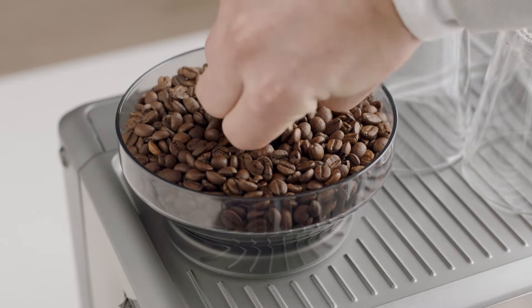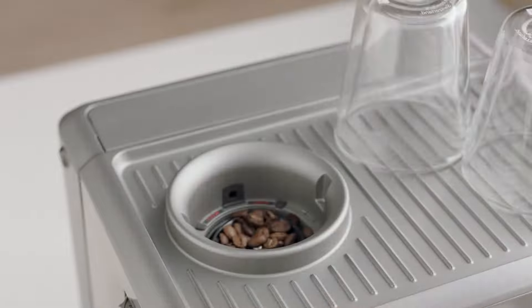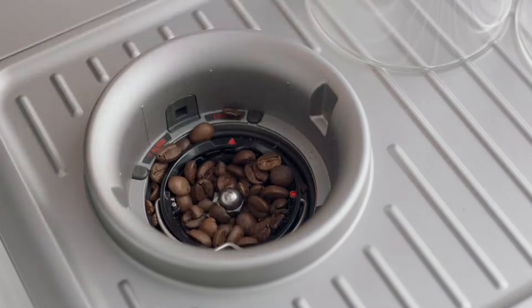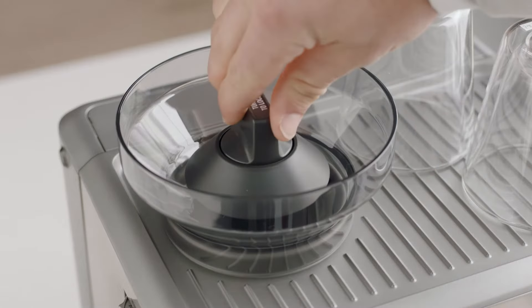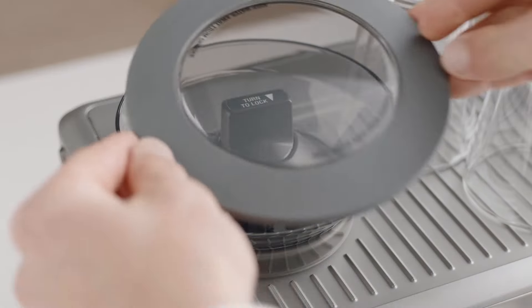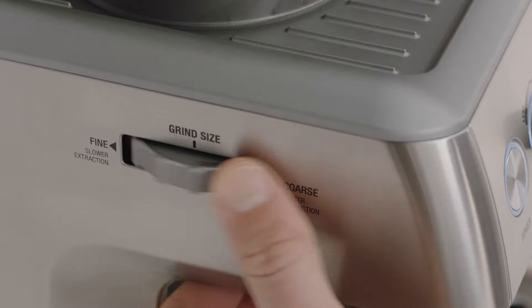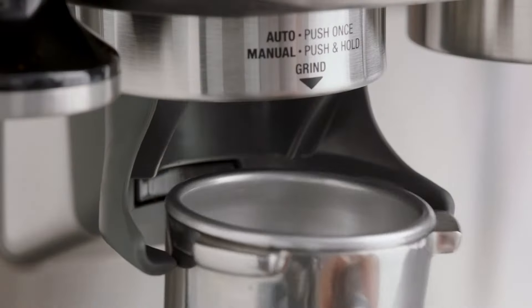Firstly, unlock and empty the hopper, then remove any remaining coffee beans. Replace and lock the hopper. Set the grind size to maximum and then run the grinder until empty.